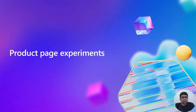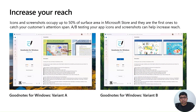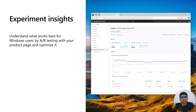Let's deep dive into product page experiments. Icons and screenshots occupy up to 50% of surface area in Microsoft Store and are the first to catch your customers' attention. You can increase your reach by A-B testing alternate product pages against the original and setting the best-performing version to display to everyone. You can compare different app icons and screenshots on your product page to find out which resonate with customers most using insights in Partner Center.